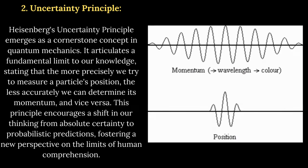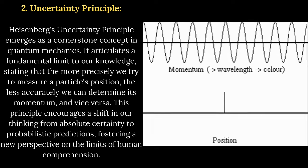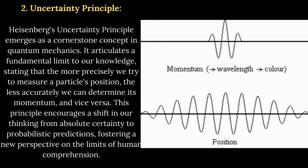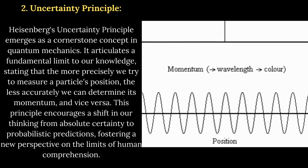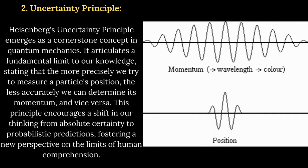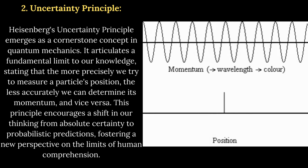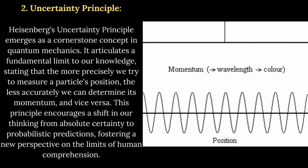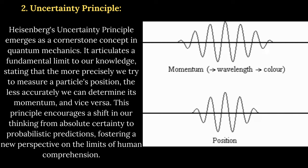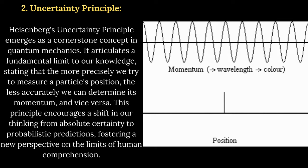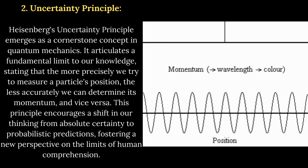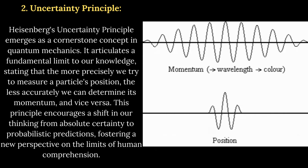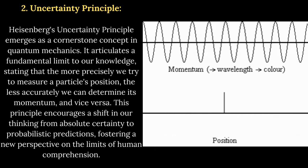Uncertainty principle. Heisenberg's uncertainty principle emerges as a cornerstone concept in quantum mechanics. It articulates a fundamental limit to our knowledge, stating that the more precisely we try to measure a particle's position, the less accurately we can determine its momentum, and vice versa. This principle encourages a shift in our thinking from absolute certainty to probabilistic predictions, fostering a new perspective on the limits of human comprehension.